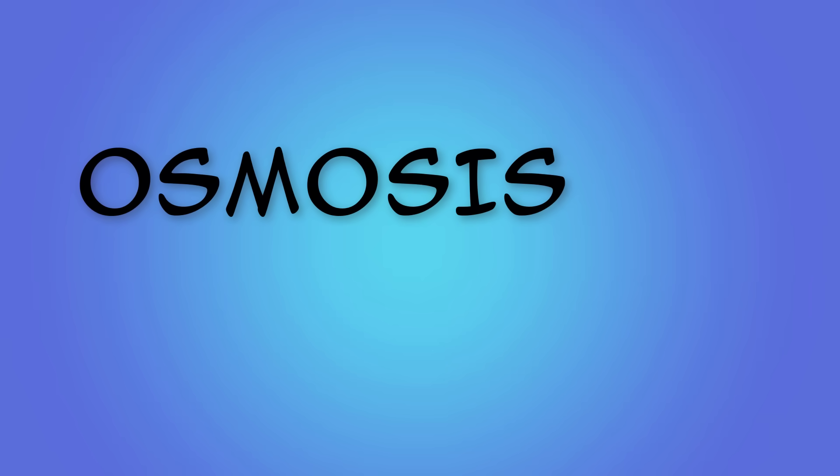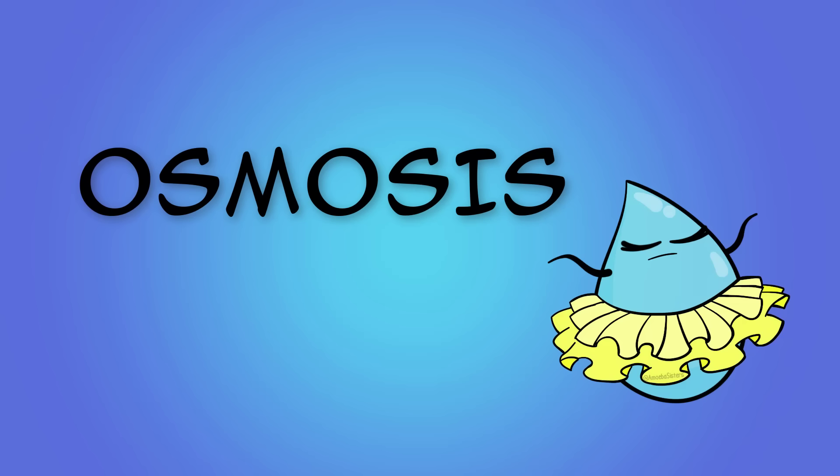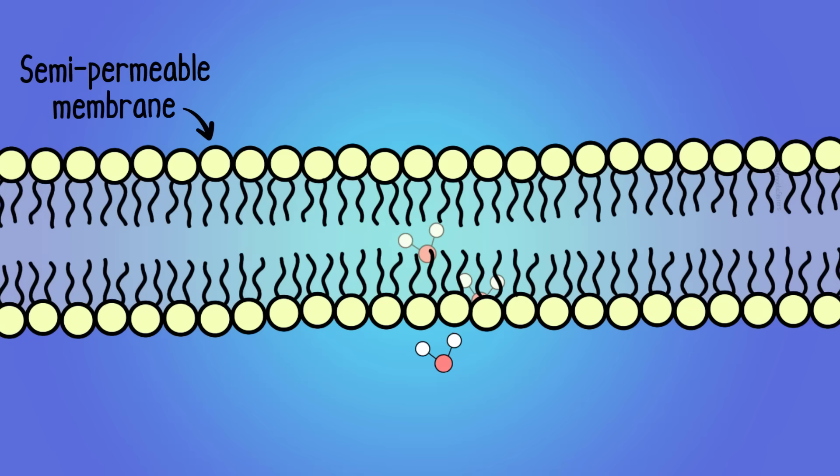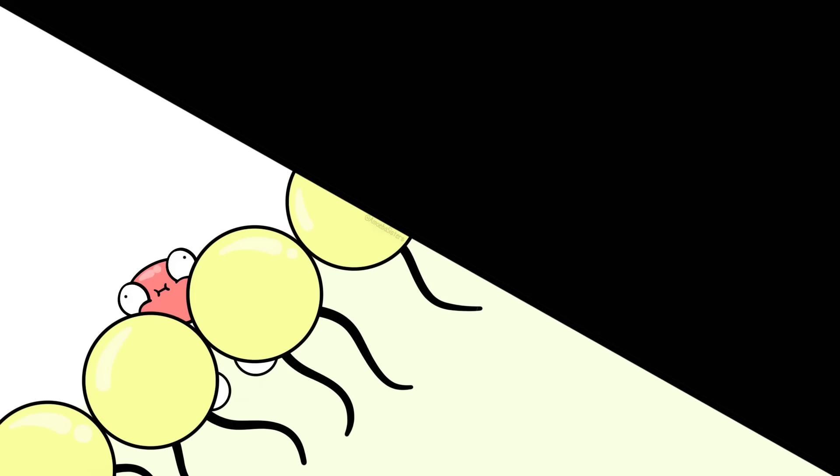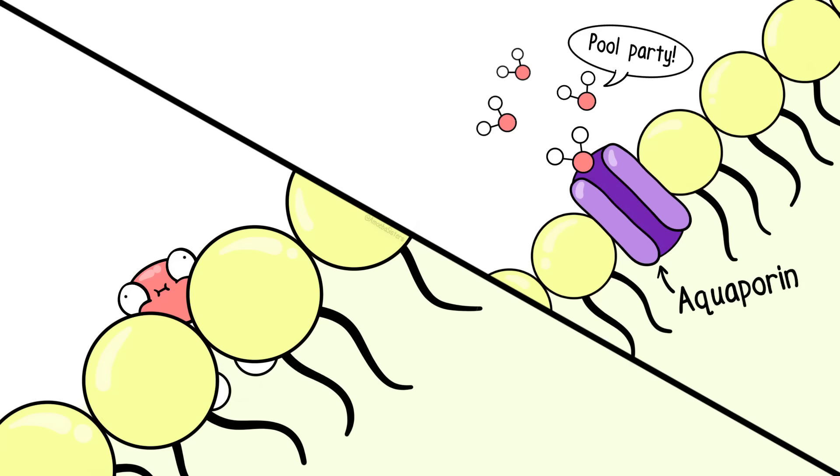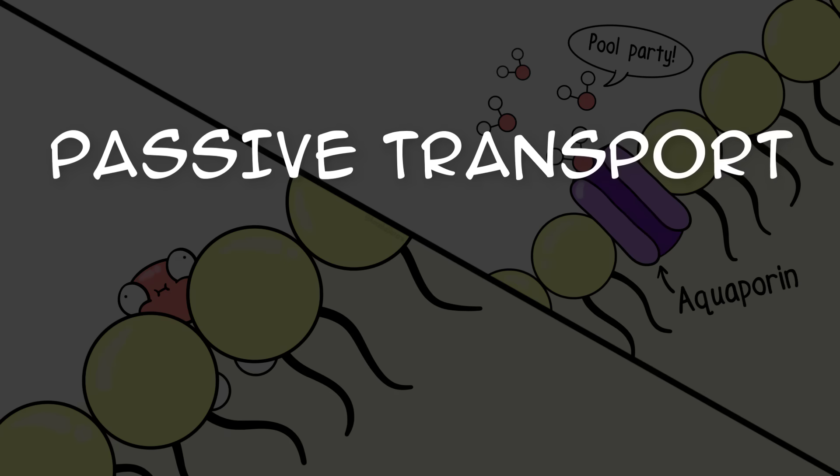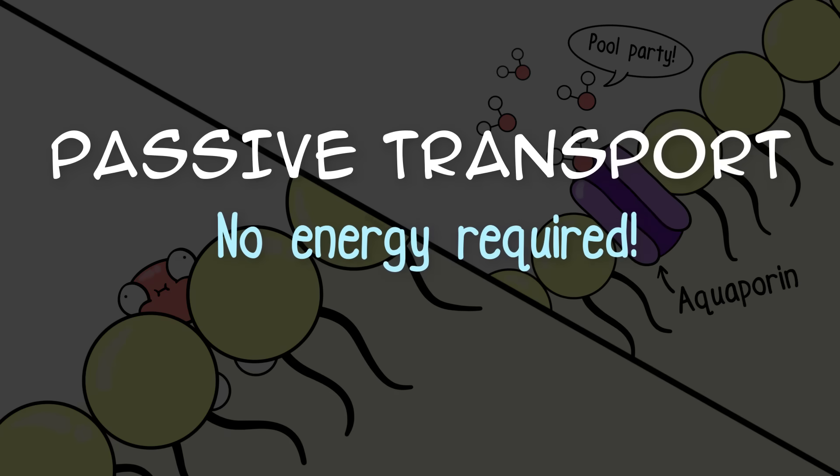When you are talking about osmosis, you are talking about the movement of water through a semi-permeable membrane like a cell membrane. Water molecules are so small that they can travel through the cell membrane unassisted or they can travel in larger quantities through protein channels like aquaporins. The movement of water molecules traveling across a cell membrane is passive transport, which means it does not require energy.